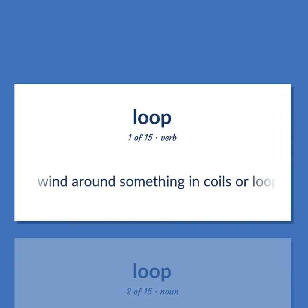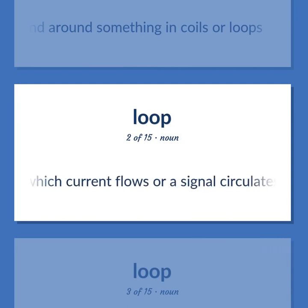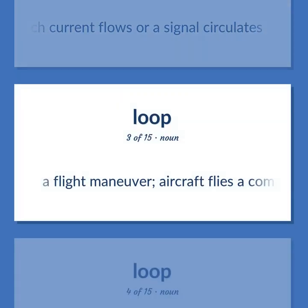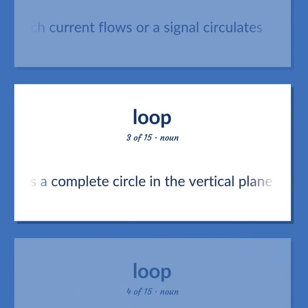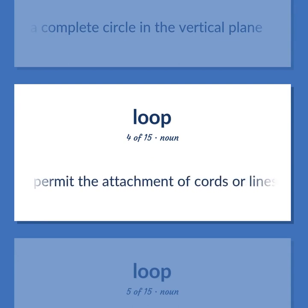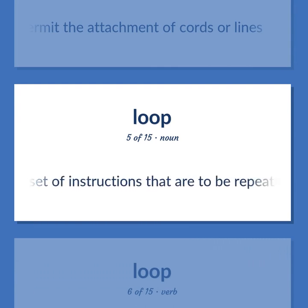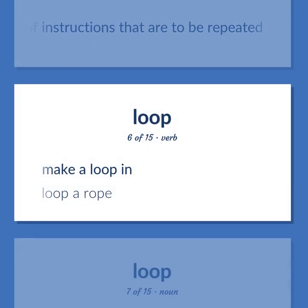LOOP: Wind around something in coils or loops. A complete electrical circuit around which current flows or a signal circulates. A flight maneuver where an aircraft flies a complete circle in the vertical plane. A fastener consisting of a metal ring for lining a small hole to permit the attachment of cords or lines. Computer Science: A single execution of a set of instructions that are to be repeated. Make a loop in; loop a rope.